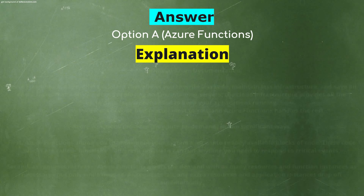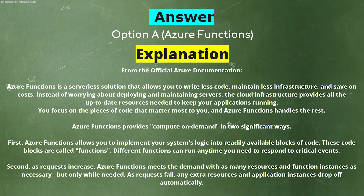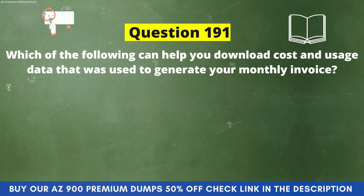Explanation from the official Azure documentation: Azure Functions is a serverless solution that allows you to write less code, maintain less infrastructure, and save on cost. Instead of worrying about deploying and maintaining servers, the cloud infrastructure provides all the up-to-date resources needed to keep your applications running. You focus on the pieces of code that matter most to you, and Azure Functions handles the rest. Azure Functions provides compute on demand in two significant ways. First, Azure Functions allows you to implement your system's logic into readily available blocks of code called functions — different functions can run any time you need to respond to critical events. Second, as requests increase, Azure Functions meets the demand with as many resources and function instances as necessary, but only while needed. As requests fall, any extra resources and application instances drop off automatically.